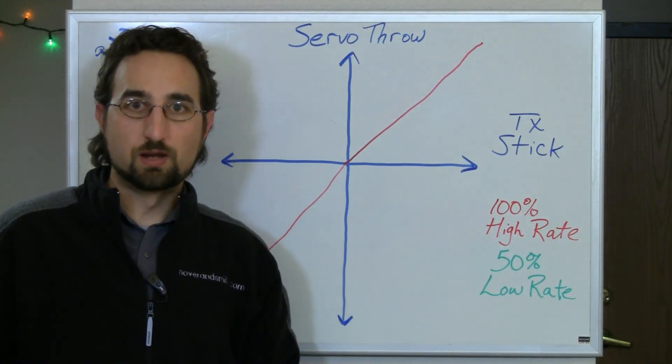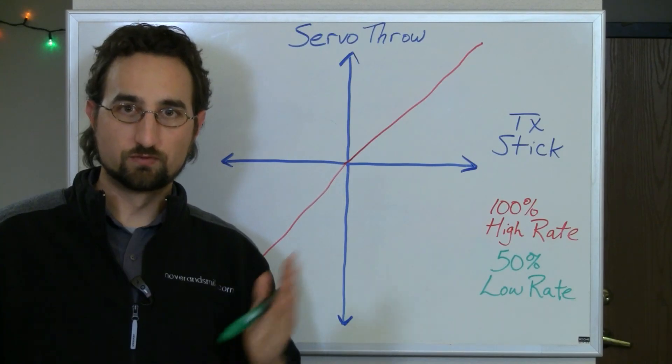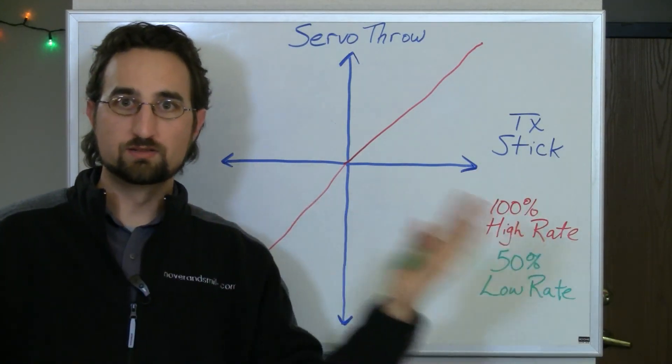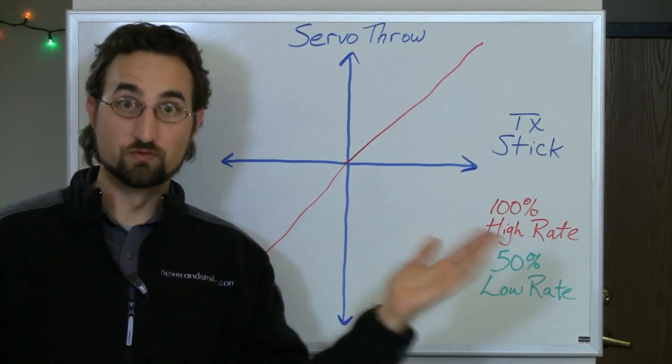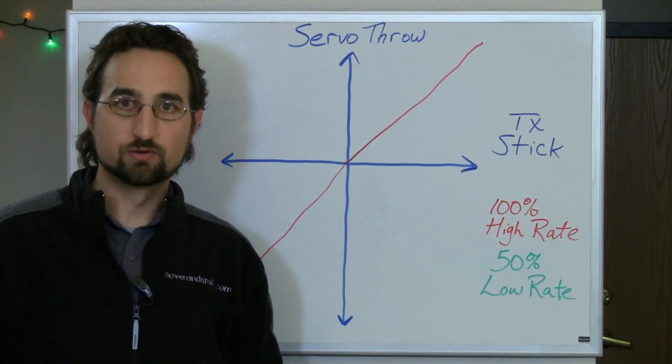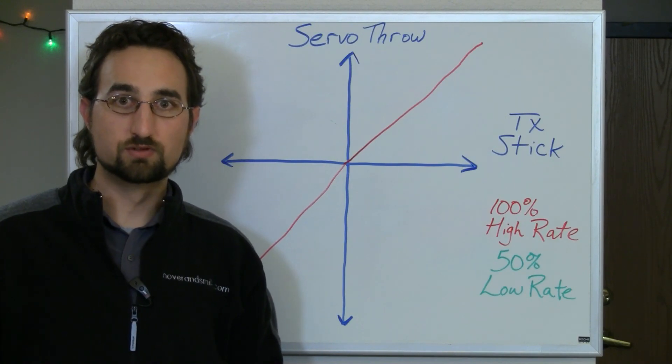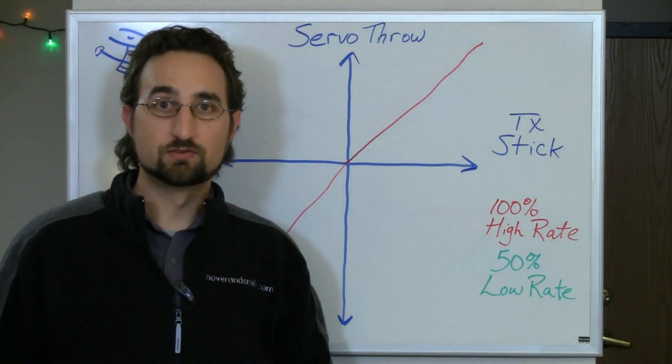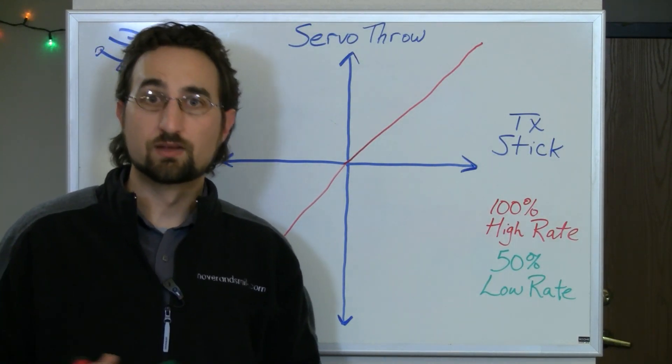This can be problematic for first time flyers because your servo arm, as that moves all the way from one end to the other, your control surface is going to move all the way from one end to the other. And unless you're ready for that, because your flight characteristics are not going to be docile, your craft is going to be a little more stunt-like in its flight characteristics, you're going to have some issues.